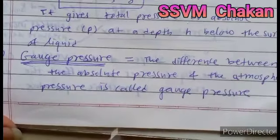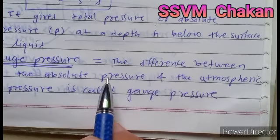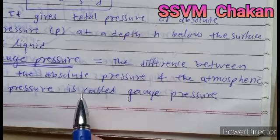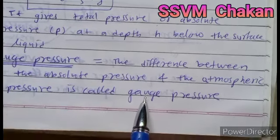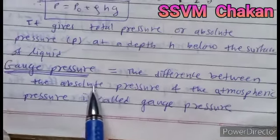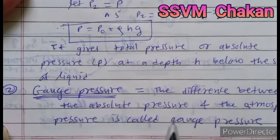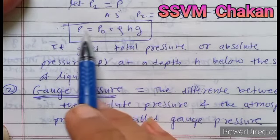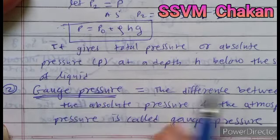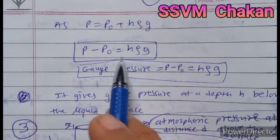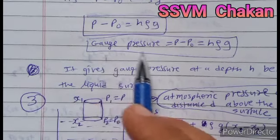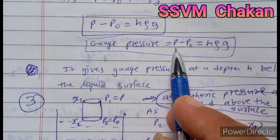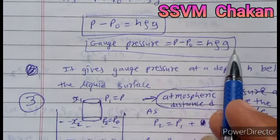Gauge pressure is the difference between the absolute pressure and atmospheric pressure. Gauge pressure = P − P0 = hρg.